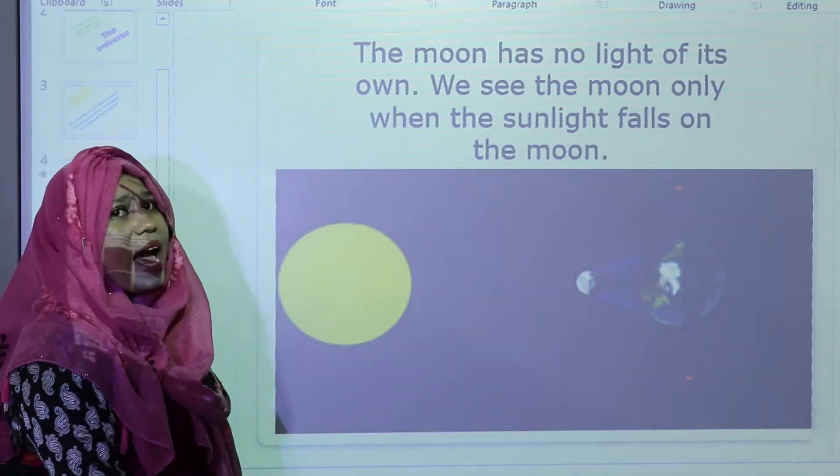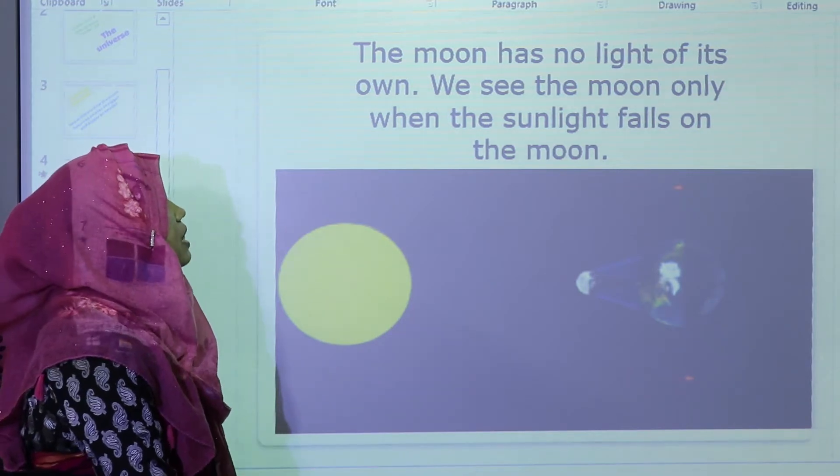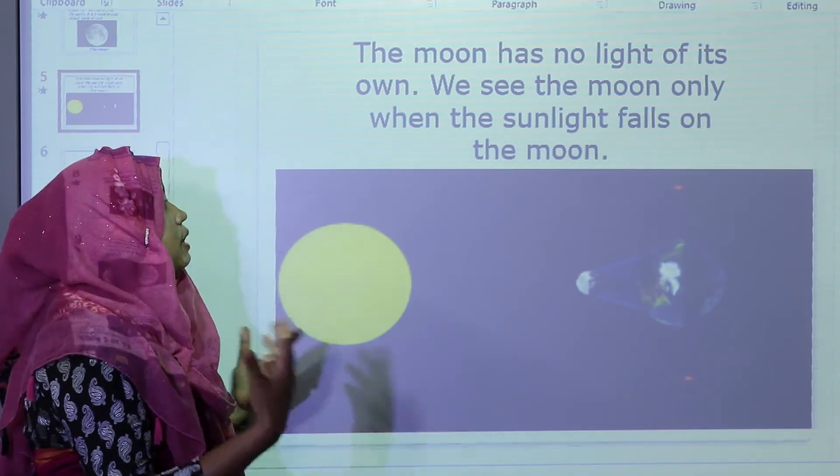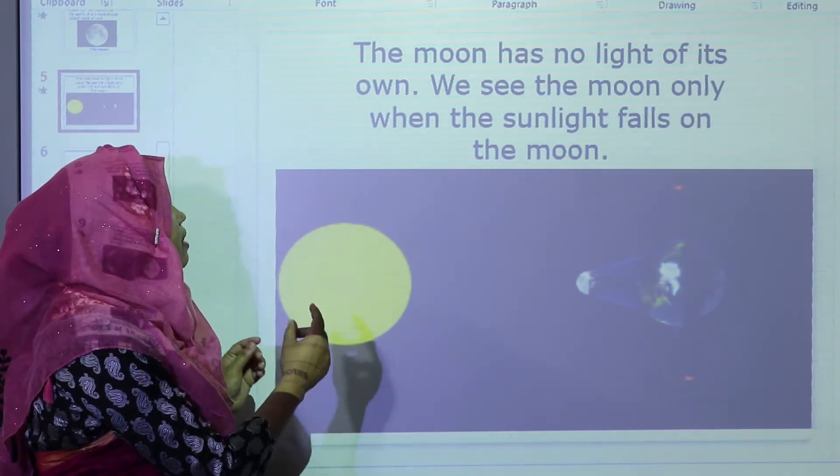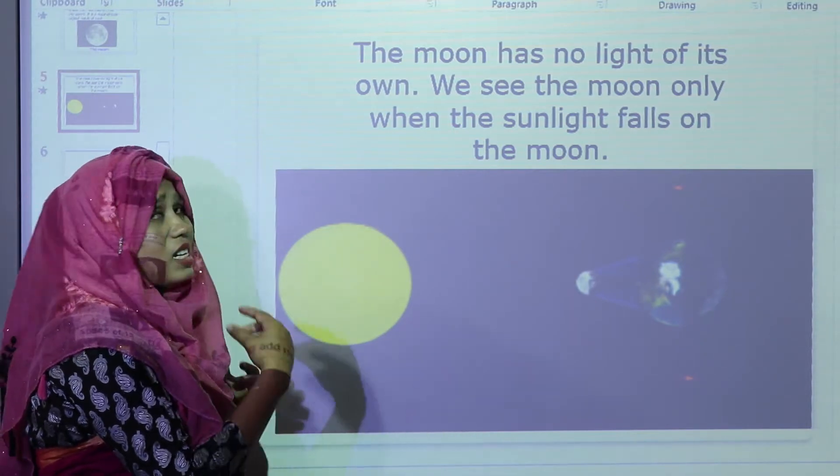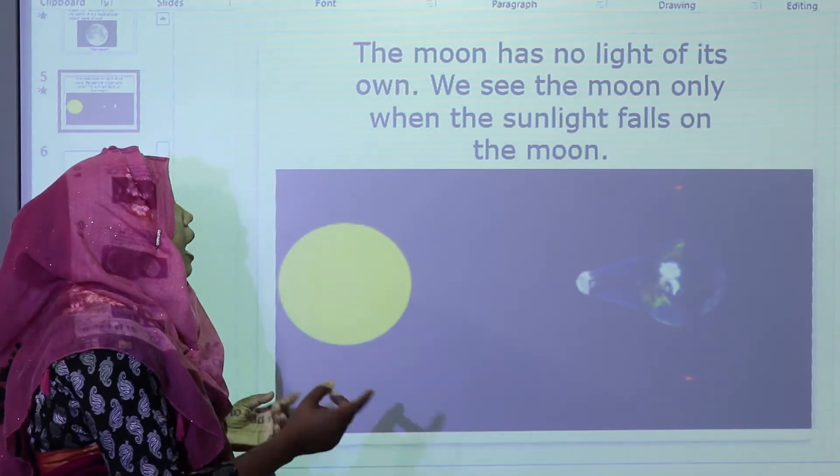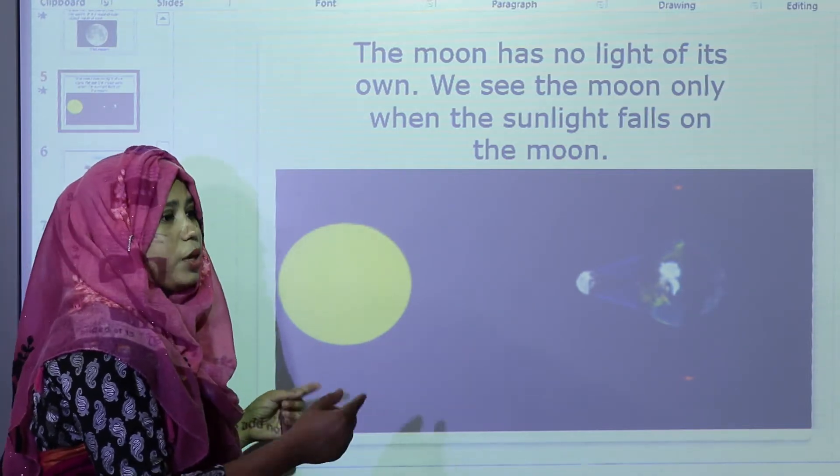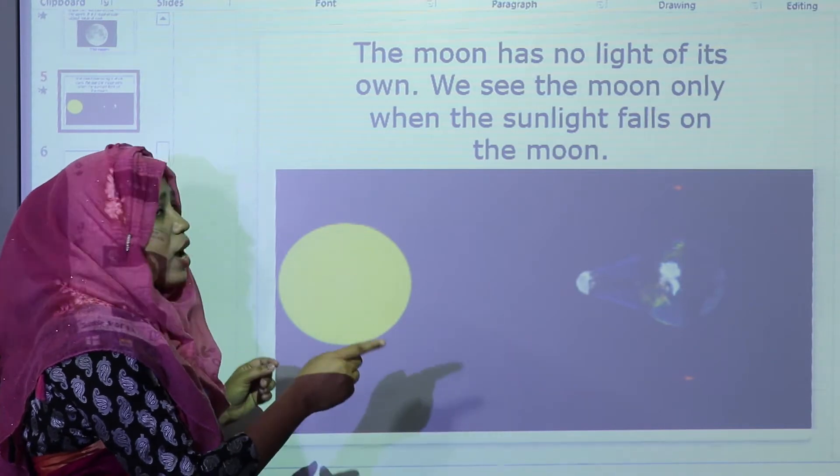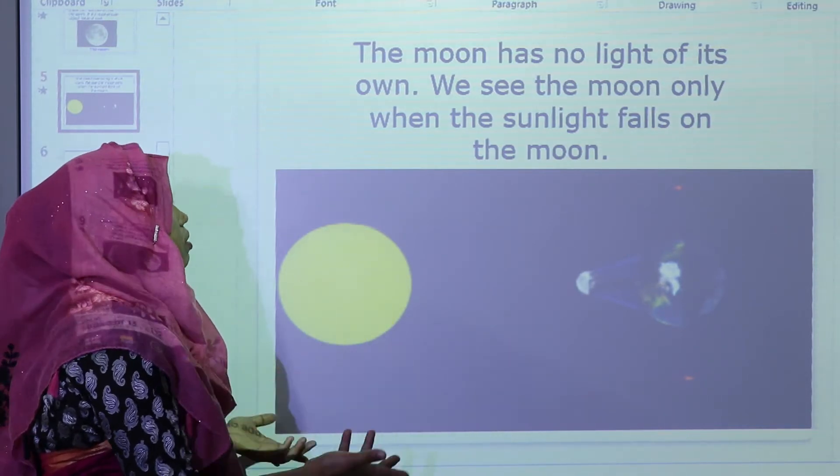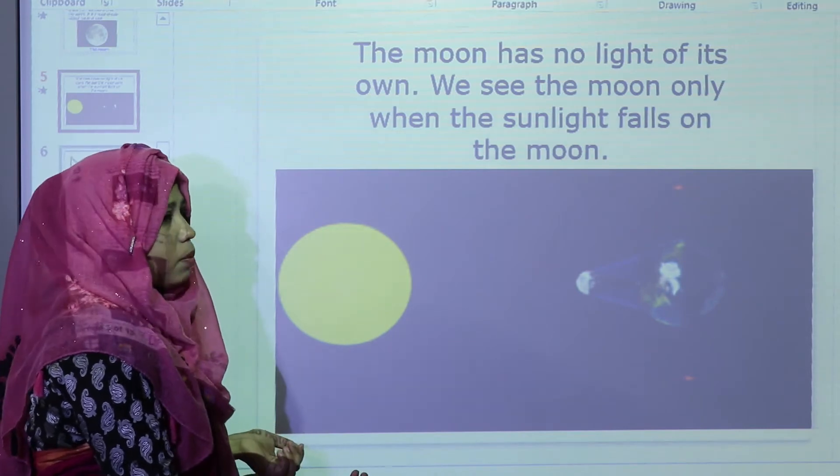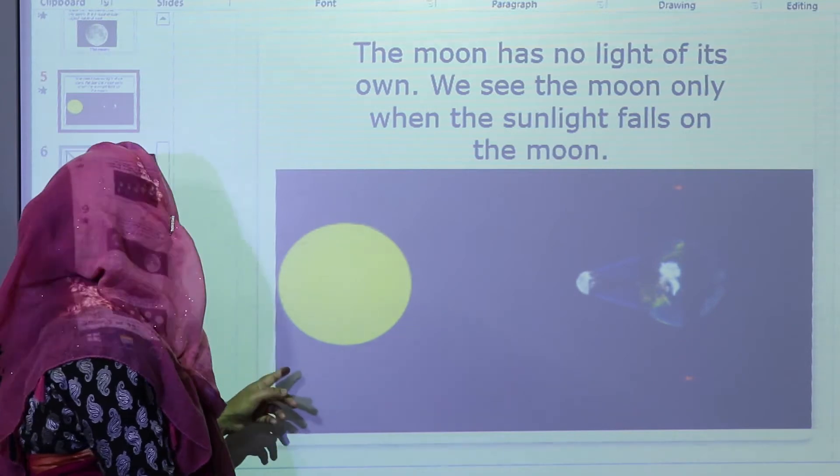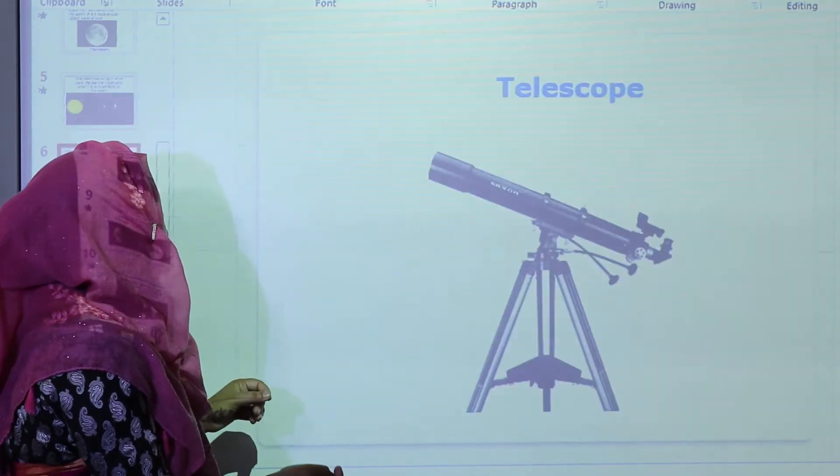The moon has no light of its own. We see the moon only when the sunlight falls on the moon. This means that the moon is a satellite, the only satellite of the earth. It has no own light, but we see the moon is bright because the light of the sunlight, when it falls on the moon, then we can see the moon.